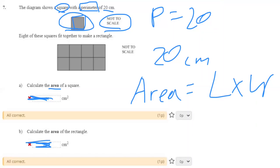So, we find 20 cm divided by 4 equals 5 cm. All right.